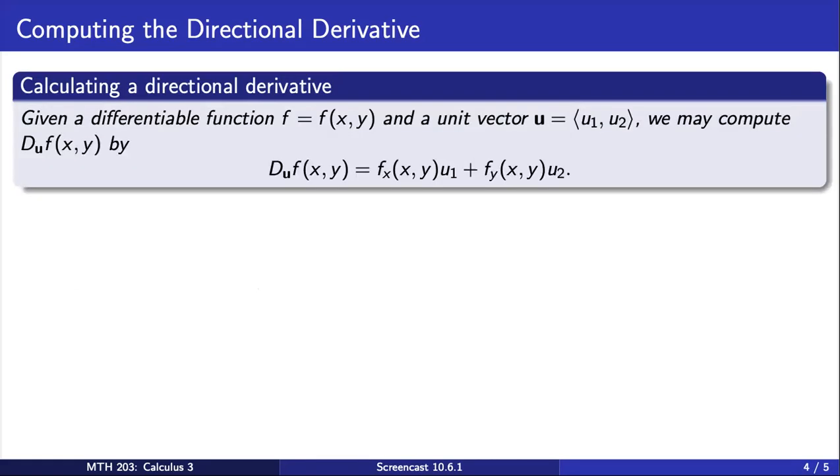What we deduced on the previous slide is stated here. The directional derivative at a point (x,y) in the direction of a unit vector u may be computed by taking the partial of f with respect to x times the x component of the vector u plus the partial derivative with respect to y times the y component of the vector u.